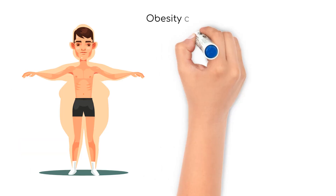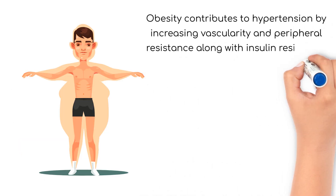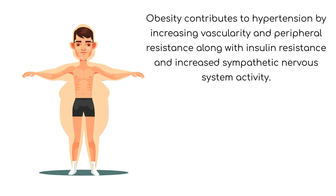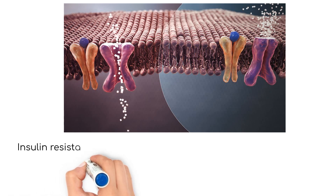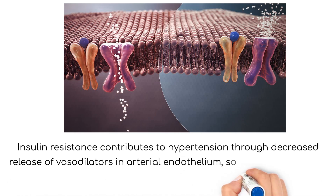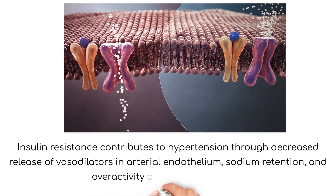Obesity contributes to hypertension by increasing vascularity and peripheral resistance, along with insulin resistance and increased sympathetic nervous system activity. Insulin resistance contributes to hypertension through decreased release of vasodilators at the arterial endothelium, sodium retention, and overactivity of the SNS and RAAS.